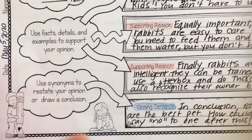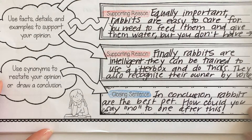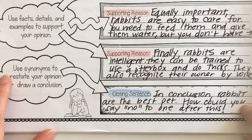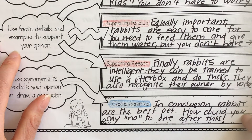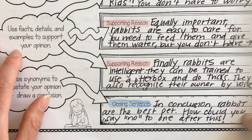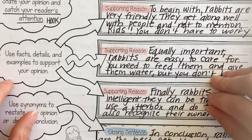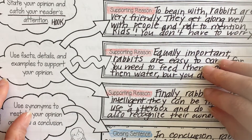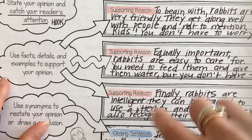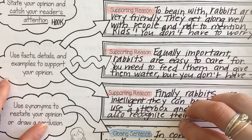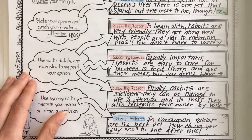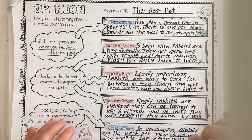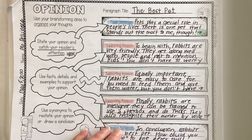My conclusion sentence states: 'In conclusion, rabbits are the best pet — how could you say no to one after this?' I even added a little extra closing. I think it's really important that while your opinion is based on your thoughts, facts make your thoughts and opinions stronger. If I hadn't looked up exactly what makes rabbits intelligent, that supporting reason wouldn't have been as strong. So if you have extra time, go ahead and look some things up to add details that make it even stronger.